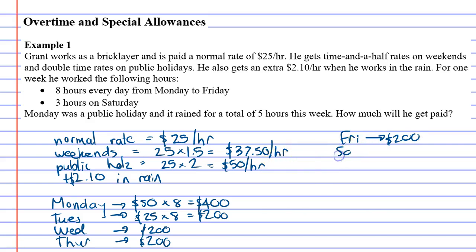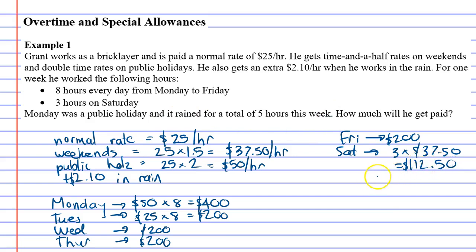Now let's look at Saturday. He worked three hours on Saturday, and it says on weekends he gets time-and-a-half, so he gets $37.50 per hour on Saturday. Working that out: 37.50 times 3 — he got $112.50 on the Saturday.